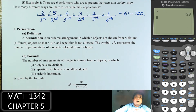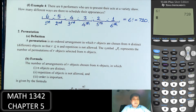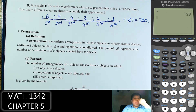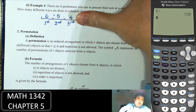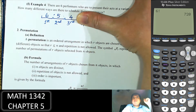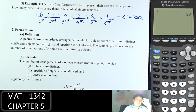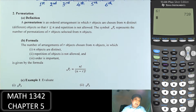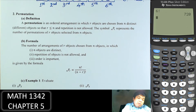Now, what if 6 performers apply but we can only choose 3? In that case we just stop at 3. That leads us to the concept of permutation. A permutation is an ordered arrangement in which r objects are chosen from n distinct objects.